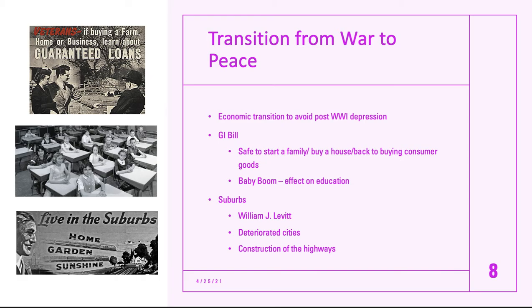The GI Bill opened up opportunities for veterans to come home to something — the years taken away where they might have gone to college, started a business, or started a family were being given back by opening the ability to go to school, buy a house, and get some security. This also avoided another Bonus Marchers situation — instead of promising a check later, the government gave actual benefits. This led to the baby boom — a significant increase and growth of families, moving out of the depression mindset.